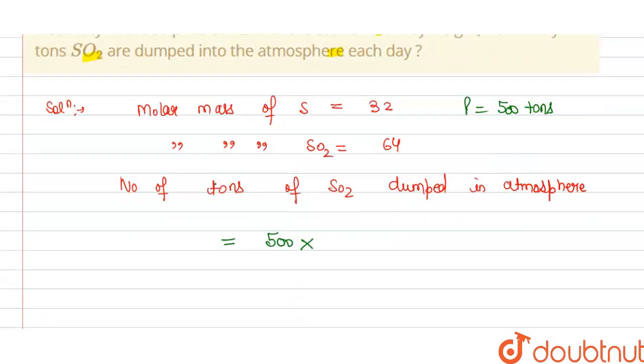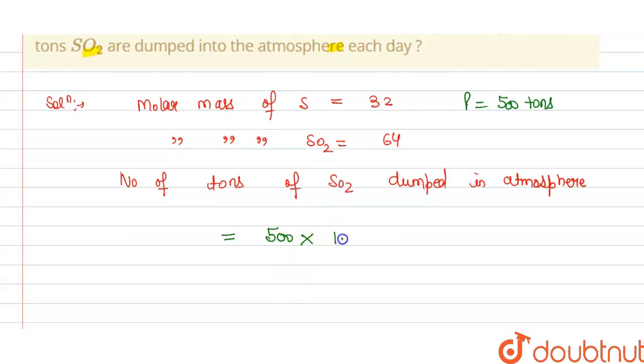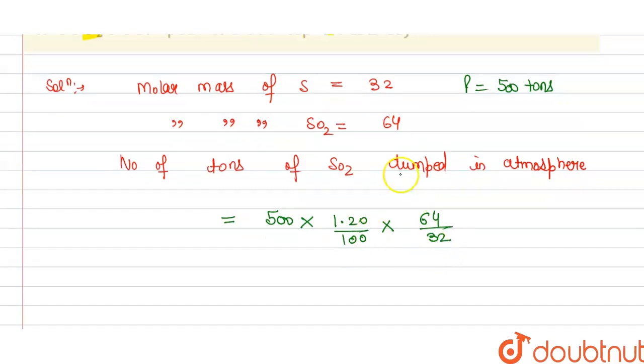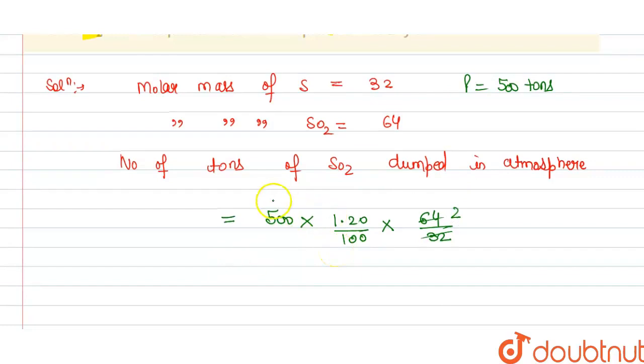Sulfur content is 1.20%, that is 1.20 divided by 100, and we have the molar mass of SO2 is 64 divided by molar mass of sulfur that is 32. So this cancels out to 2, and this cancels out to 2.